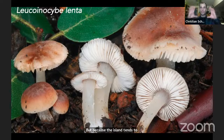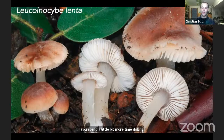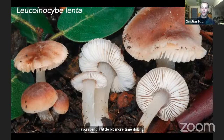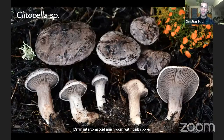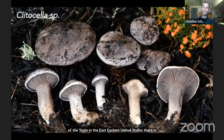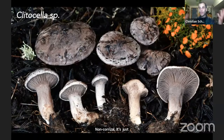The island tends to focus your attention — everything feels special, everything feels new, everything feels significant. You spend more time drilling down on the identities of what you find and then discover you had overlooked it on the mainland all along. This happened to us multiple times. Most recently on the island we found dozens of specimens of a Clitocella — an entolomatoid mushroom with pink spores, a very rare genus in California. There's only one other species in the northeastern corner of the state.